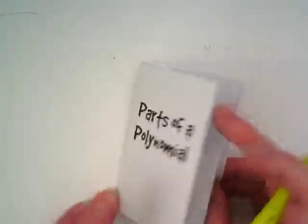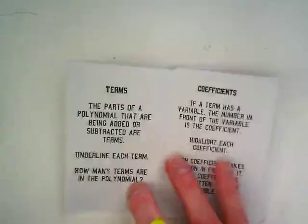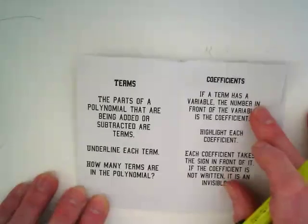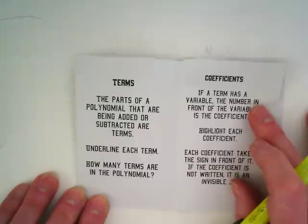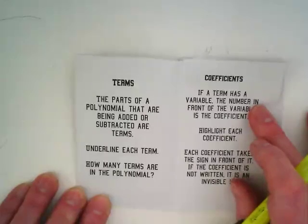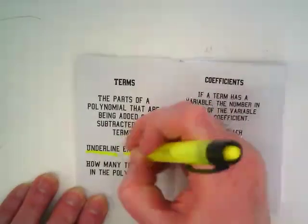I'd like you to open to the first page of our mini-book, where you will see the definition for terms. Terms are the parts of a polynomial that are being added or subtracted. Parts of a polynomial that are being added or subtracted are terms. We are going to, as we work with this today, underline each term.